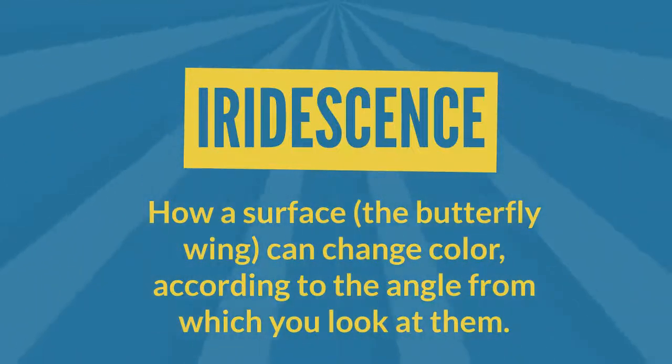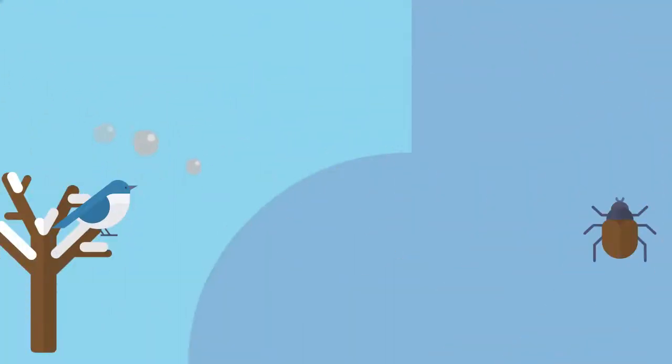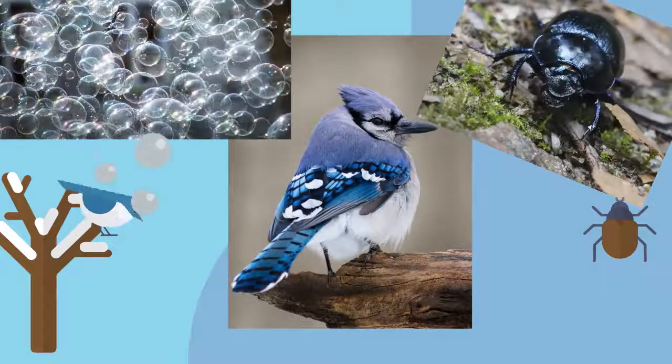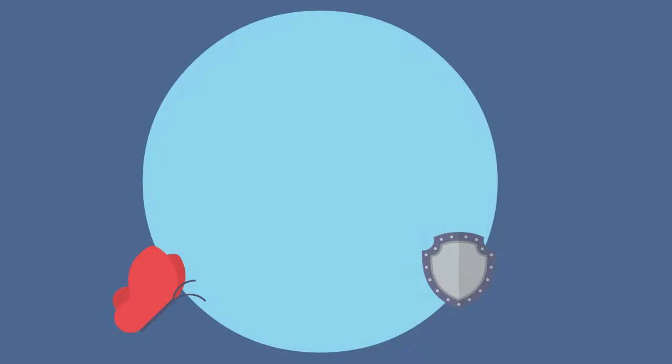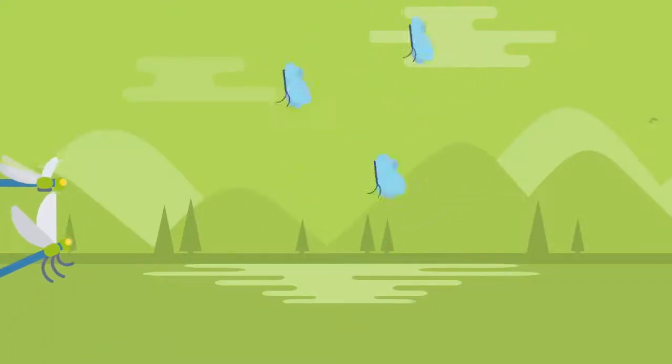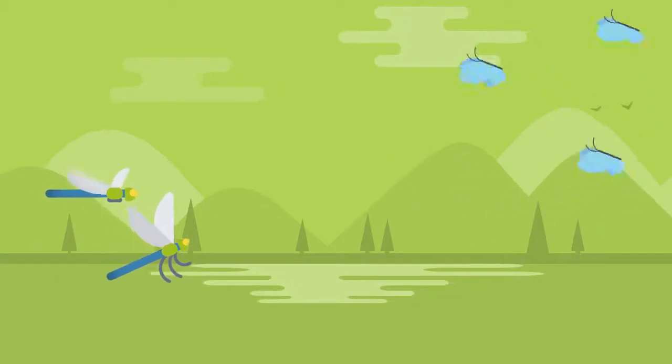We can see similar structural colors and iridescence in blue jays, beetle shells, and even soap bubbles. How do reflecting wings protect the butterfly, you may ask? They use color to their advantage, mainly by avoiding potential predators.